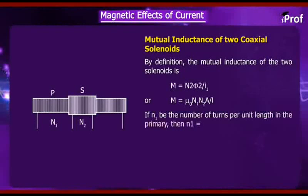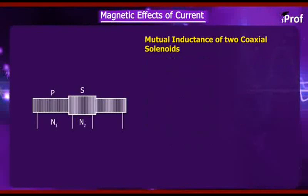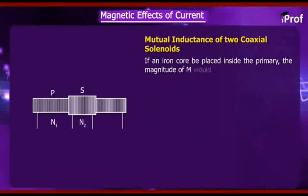If n1 is the number of turns per unit length in the primary, then n1 = N1/L, and we have M = μ₀ n1 N2 A. If an iron core is placed inside the primary, the magnitude of M would greatly increase.